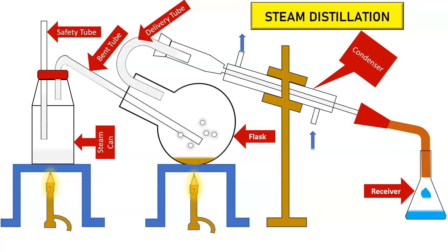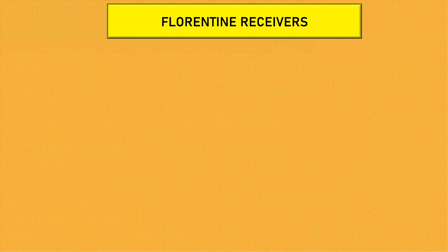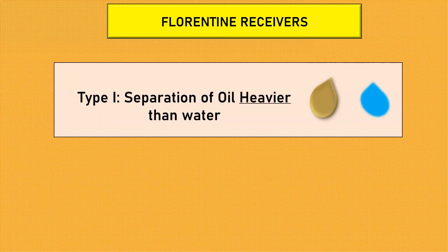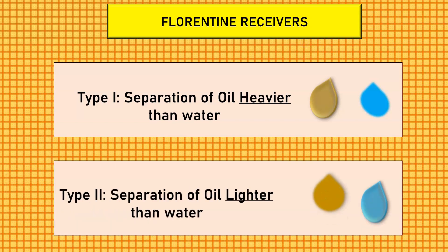The distillate is then collected in the Florentine receiver, where the oil is completely separated from the water. Florentine receivers are of two types: Type 1 is used for the separation of oil that is heavier than water, and Type 2 is used for the separation of oil that is lighter than water.